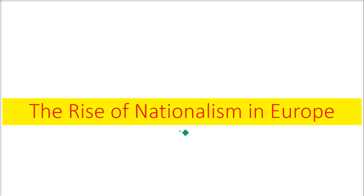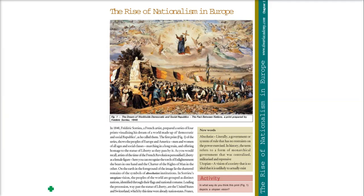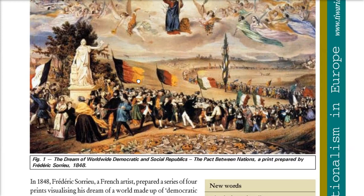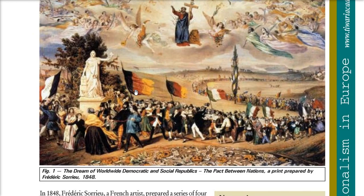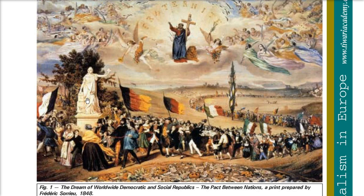We are discussing the rise of nationalism in Europe. What is nationalism? It is called Rashthwar, a kind of patriotism or love for the region. Here is a picture we are going to talk about. This was prepared by Frederick Sorrieu in 1848. The picture shows a women's statue representing freedom or liberty, and there are people in line with different country flags. Here we also have Jesus Christ and others shedding their blessings.